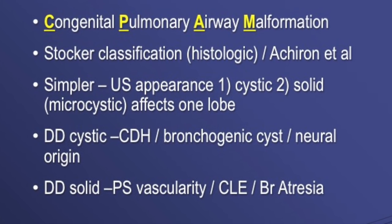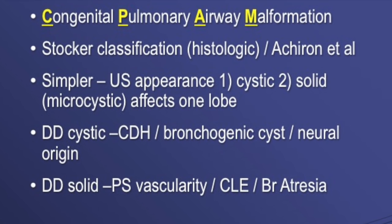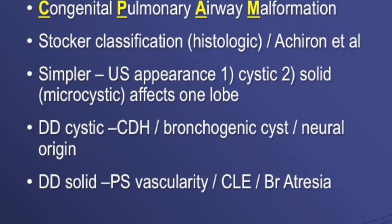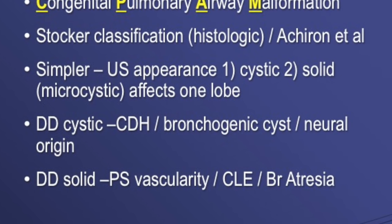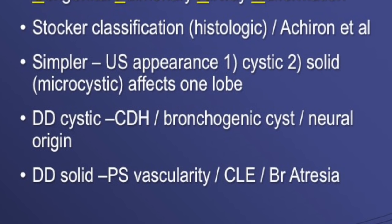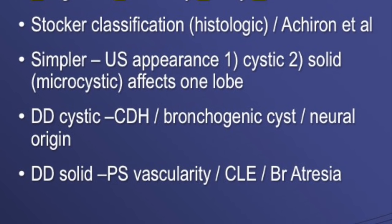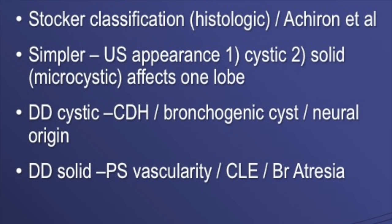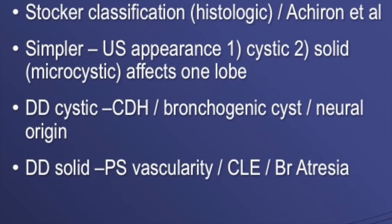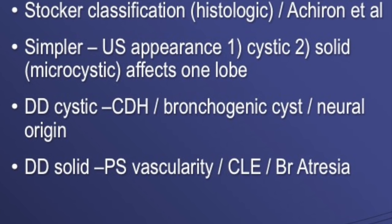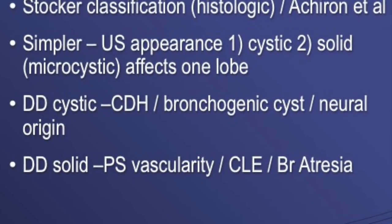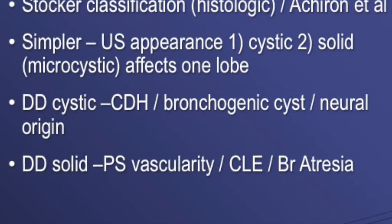The differential diagnosis of cystic lesions will be congenital diaphragmatic hernia, bronchogenic cyst, or cysts of neural origin. The differential diagnosis of solid echogenic lesions will be pulmonary sequestration — which you can differentiate because of vascularity — as well as congenital lobar emphysema and bronchial atresia, where the entire lung has become echogenic.